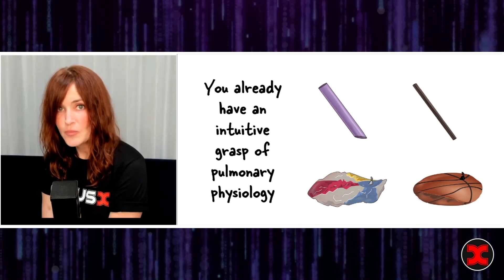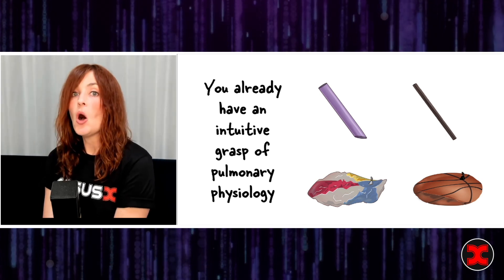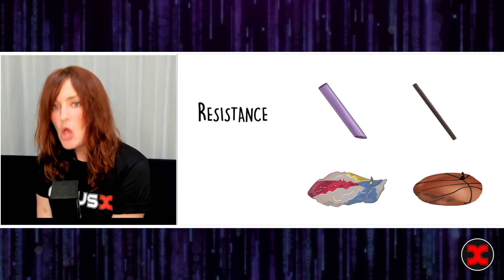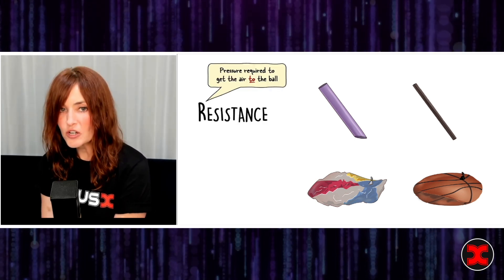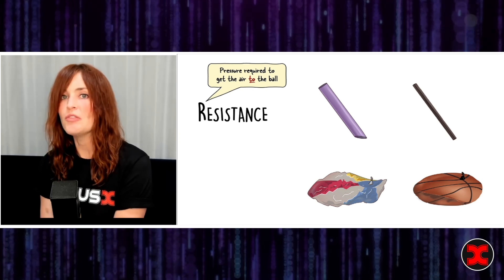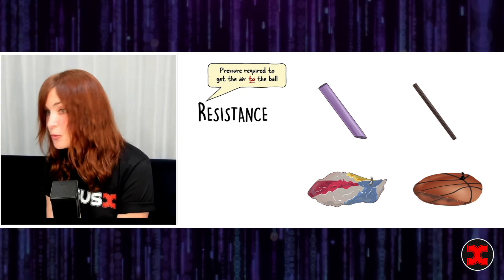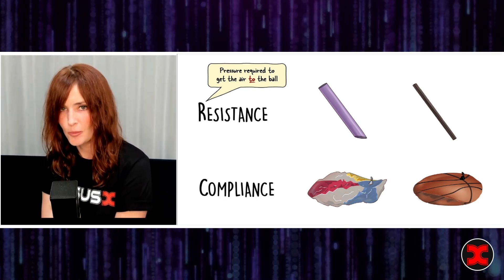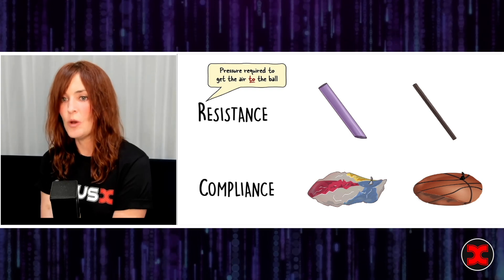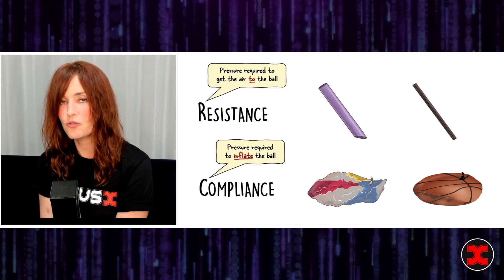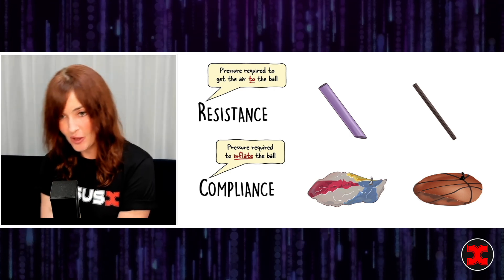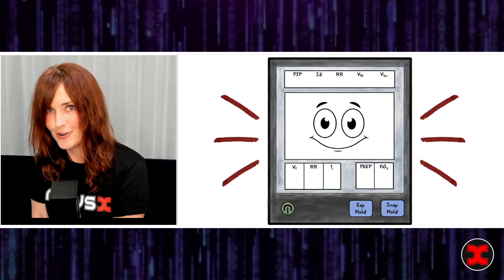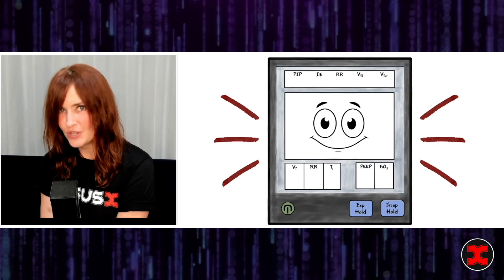Now all we need to do is map that intuitive understanding onto terms of pulmonary physiology. The first term is resistance — resistance refers to the pressure required to get the air to the ball, so resistance is telling you about the straws. How much pressure does it take to get the air through those straws to the ball? Compliance is the second term — compliance is telling you about the ball part. Compliance tells you the pressure required to actually inflate the ball. Those are the two things — resistance and compliance — that your ventilator is really going to help you figure out about your patient's lungs.